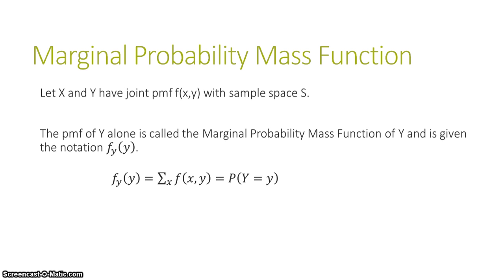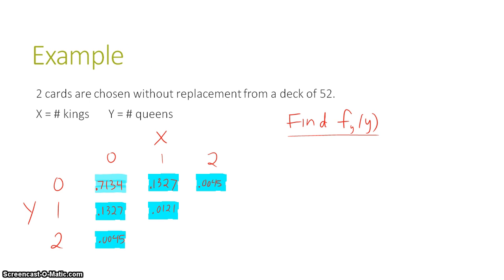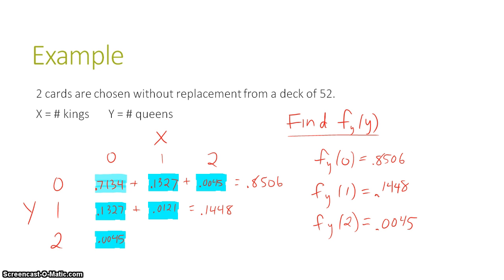Completely similarly, we can talk about the probability mass function of Y alone, which is called the marginal probability mass function of Y, given the notation f_Y(y). Now instead of summing over all values of y, we're summing over all values of x to find the probability that Y equals y. Adding across all values of x gives us the marginal probability mass function of Y.